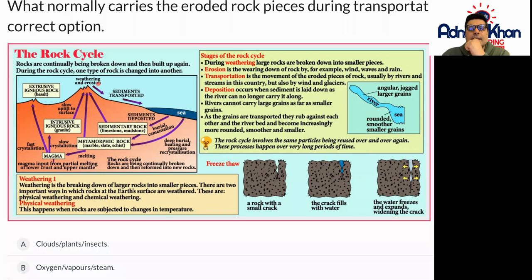You can see this rock cycle here. So we can see this diagram that shows us what's going on. In total you've got the various weathering and erosion that takes place through the rivers.